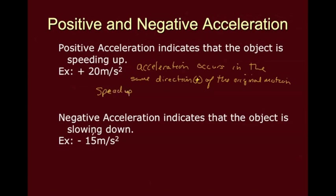Negative acceleration indicates that the object is slowing down. We're moving in the opposite direction as the original motion. So acceleration is opposite to the original motion, or negative. So acceleration in the opposite direction of motion slows down.